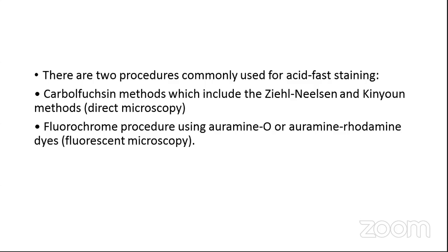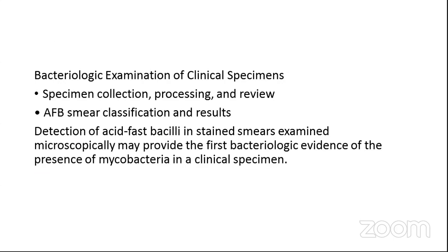In India, the National Tuberculosis Control Program provides provisions for fluorescent microscopes so that several patient samples can be handled in less time. With fluorescent microscopy, it is easier to identify the presence of bacteria in the smear. After preparing the smear and staining, the next important responsibility is to classify the smear.